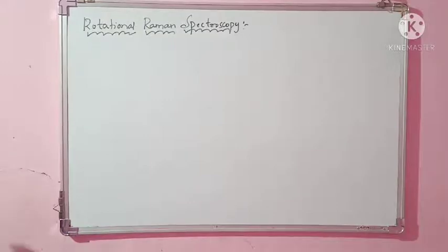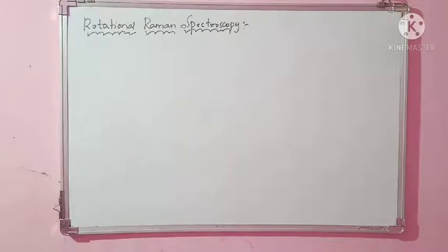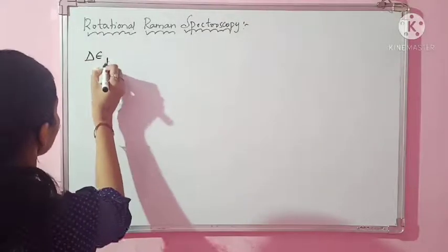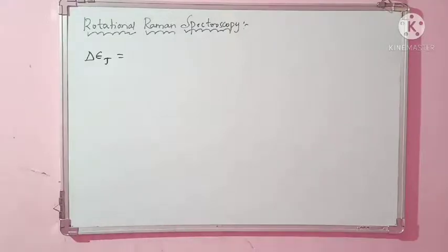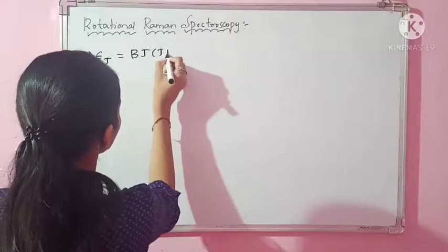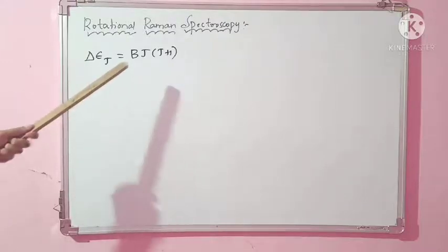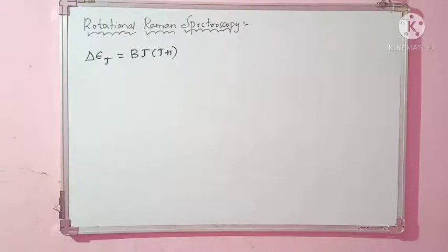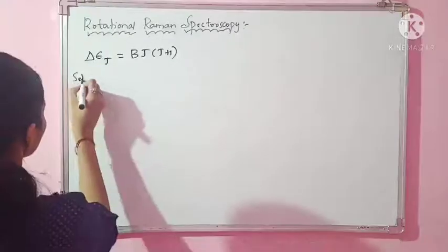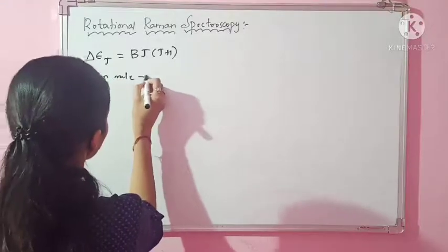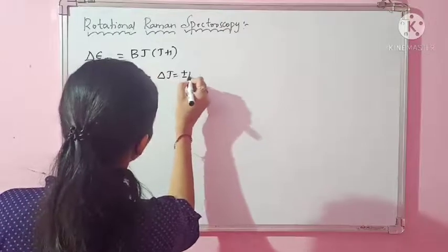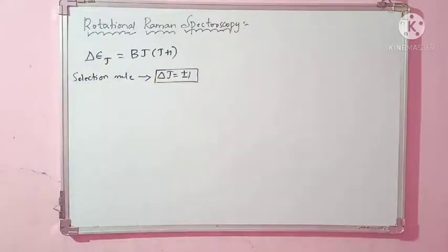Hello everyone, today we will be understanding the concept of rotational Raman spectroscopy. First, let us review some concepts about rotation. In rotational spectroscopy, the difference between two energy levels is given by ΔE_J = B·J(J+1), where B is the rotational constant and J is the rotational quantum number. The selection rule for rotation is ΔJ = ±1.